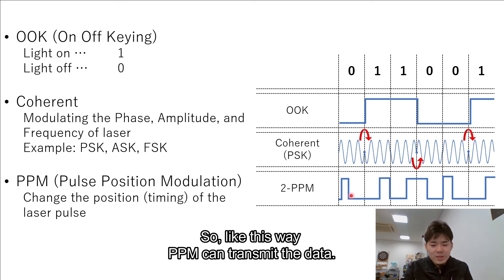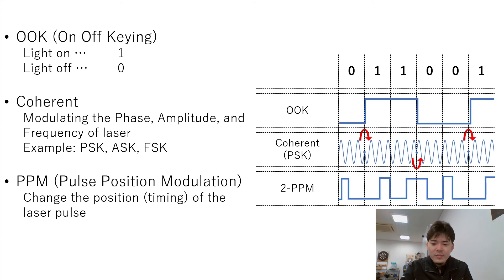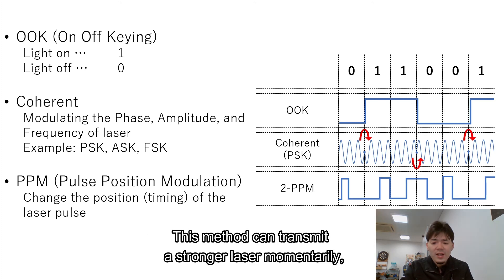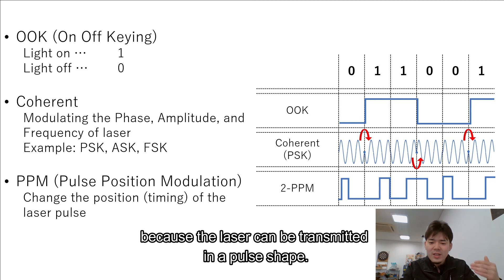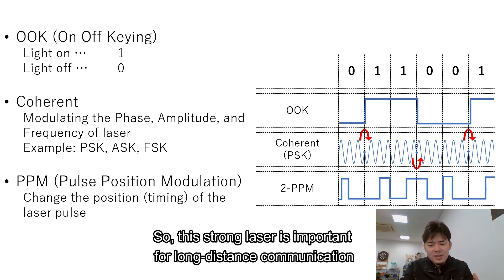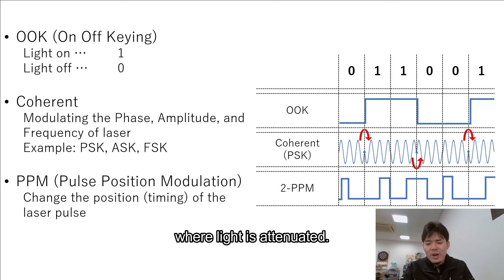So like this way, PPM can transmit data. What's the good point of this method? This method can transmit a stronger laser momentarily, because the laser can transmit in a pulse shape. So this strong laser is important for long distance communication, where light is attenuated.